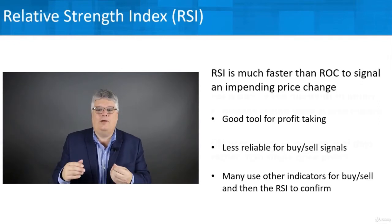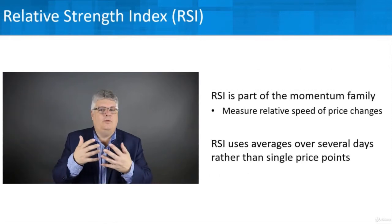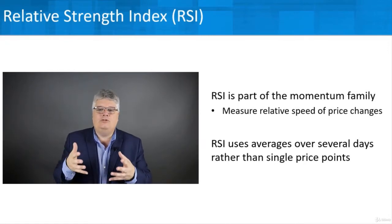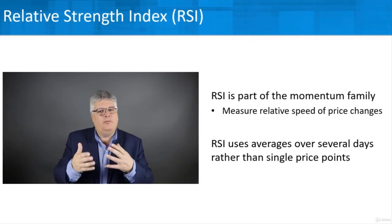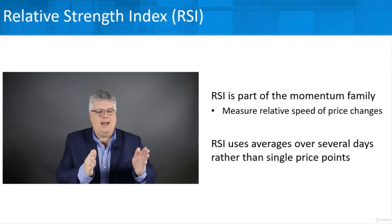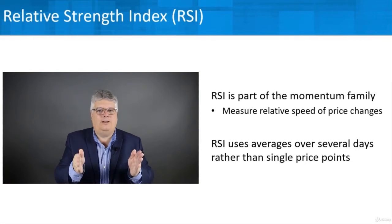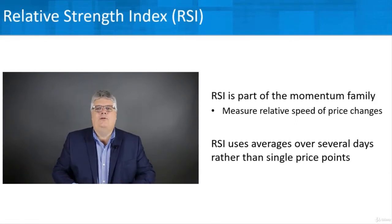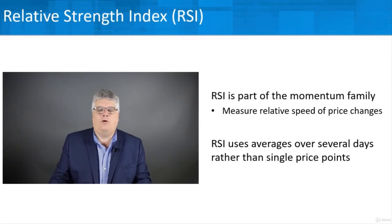RSI is part of the momentum family, meaning it's looking at the relative speed of price changes — how it's accelerating or decelerating. The key difference is it uses averages over several days rather than a single price point. With traditional ROC momentum, if you're looking at 10 days, you go back 10 days and look at the price there, and it doesn't care about what happens in between. RSI uses averages over that period, which helps it be more sensitive and faster-acting than traditional ROC.